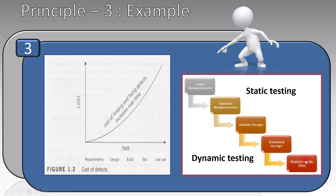Now to correct the defect in the implementation stage, we have to correct all the previous subsequent stages. All of this will take a lot of time, labor, and resources, which means that it will cost a lot of money. This is why principle 3 says to perform testing as early as possible.